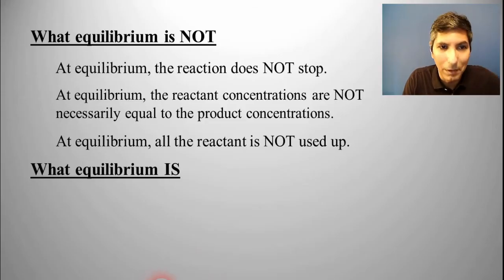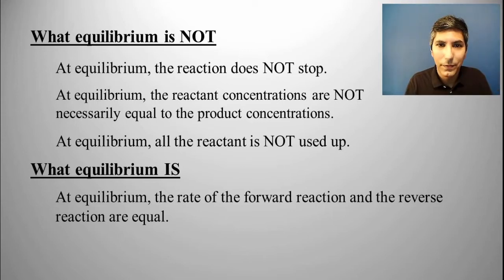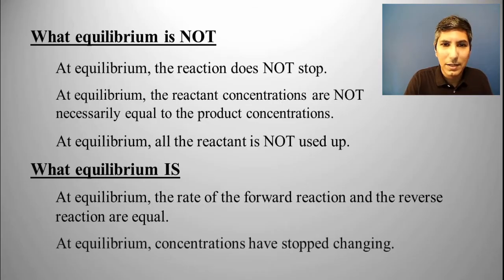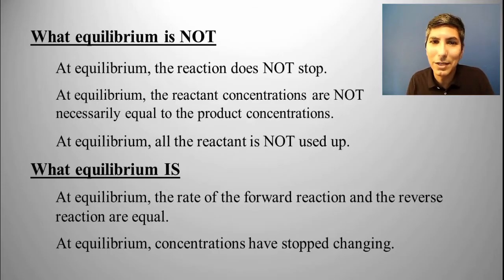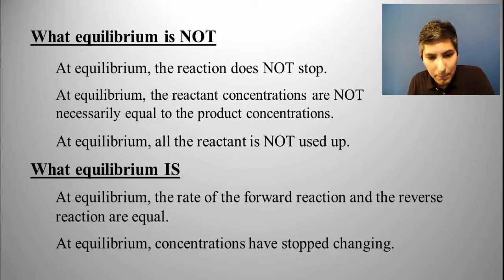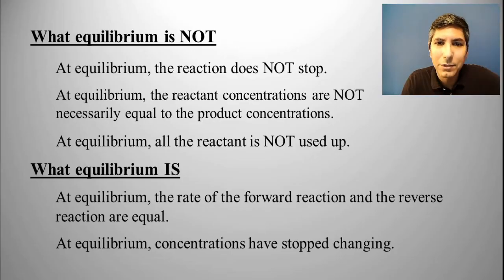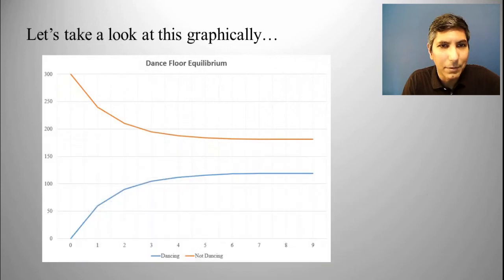So what is equilibrium? At equilibrium, the rate of the forward reaction and the reverse reaction are equal. From a macroscopic chemistry point of view, as we measure concentrations, that means the concentrations have stopped changing — just like in our dance floor problem, where the number of people dancing and not dancing stayed constant once equilibrium was reached.